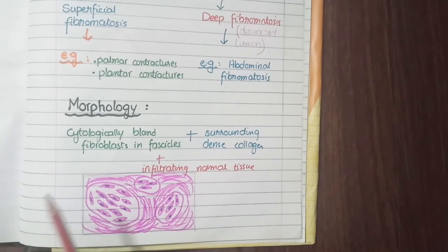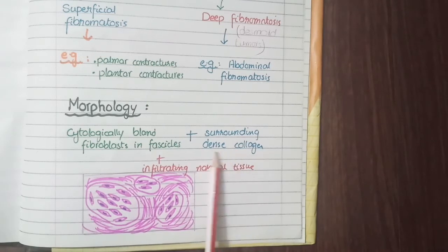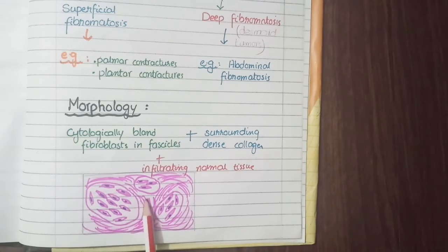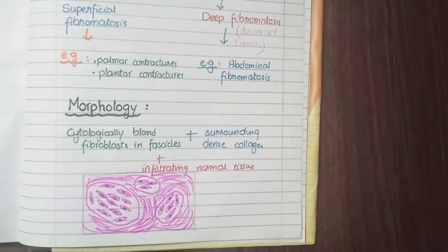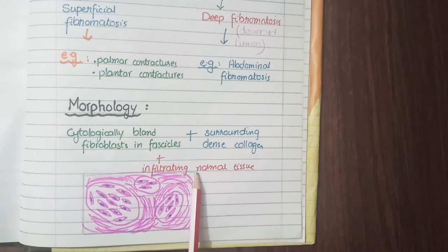Surrounding these fascicles of fibroblasts is a dense network of collagen tissue. You can see here in this diagram the collagen network surrounding these fascicles. In some histopathological slides, these fascicles of fibroblasts may be invading or infiltrating the surrounding local tissues.